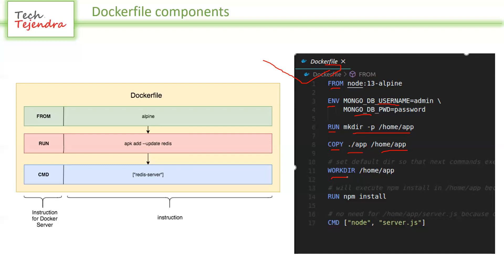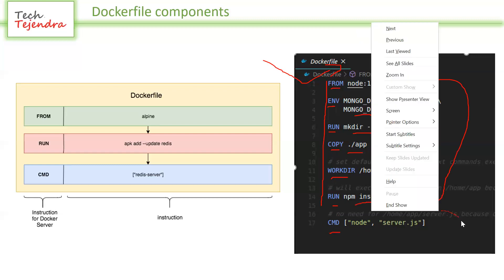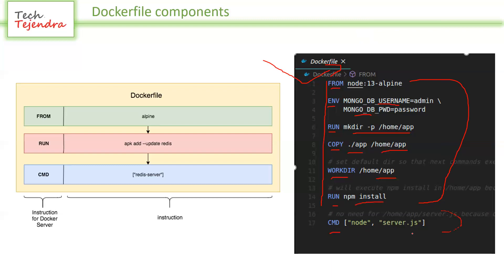WORKDIR means all subsequent commands will execute from that directory — we are instructing Docker that everything should be done inside this directory. Then using RUN we install some npm packages inside the image itself. From the FROM instruction down to the second-to-last instruction, these are all for creating the image. The CMD instruction is special — it executes once the image is running inside a container.